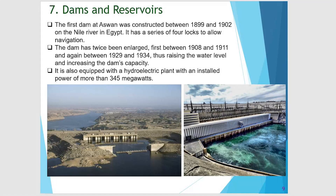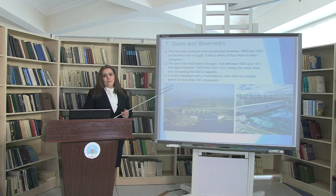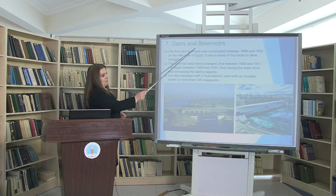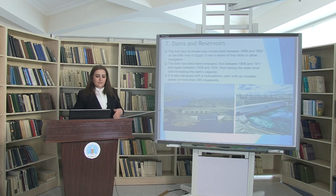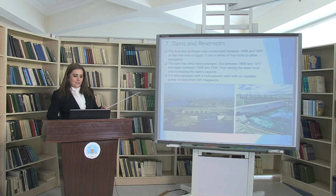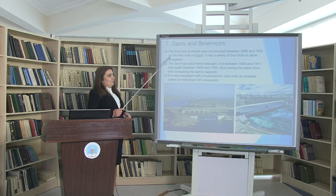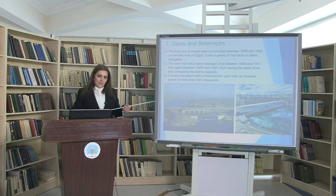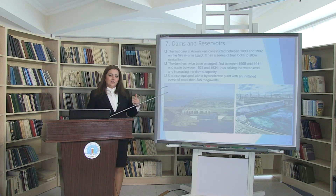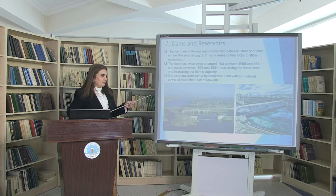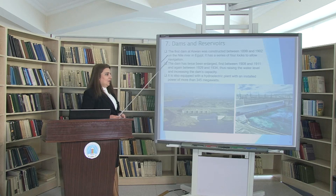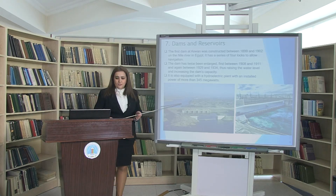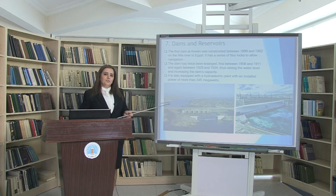Regarding dams and reservoirs on the Nile River: the first dam at Aswan was constructed between 1899 and 1902. It has four locks and is very useful for navigation. The dam was twice enlarged in different years because of rising water levels. It is also equipped with a hydroelectric plant with an installed power of more than 345 megawatts.